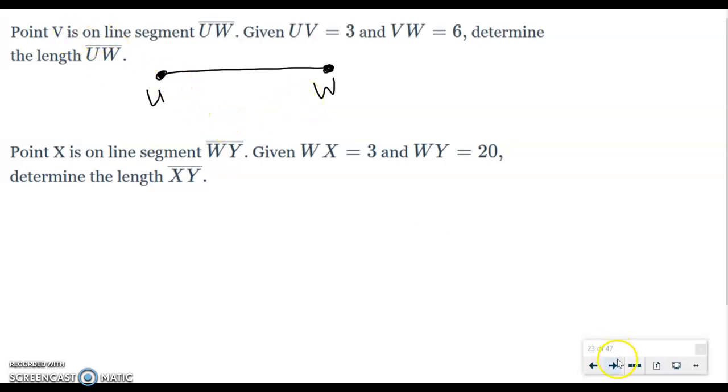And then I'm going to place V in the middle of it. Now that gives me a sense of what we're talking about. It's not the exact measurement, but I understand that UW is the whole line segment and V is in the middle. So I know that U to V plus V to W will equal the whole thing, U to W. So UV plus VW equals UW.